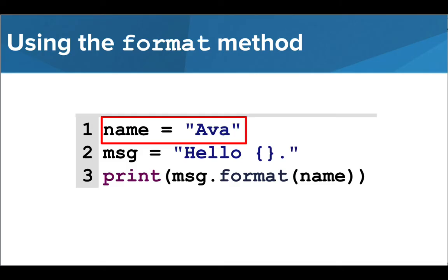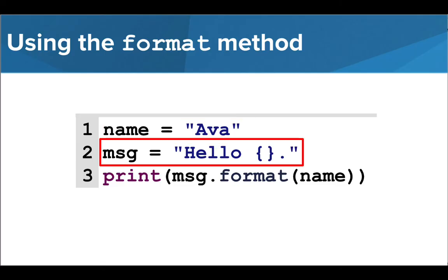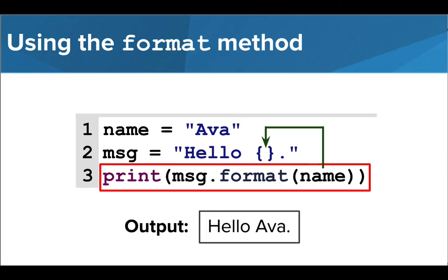First, we begin with a piece of information. This may be a variable we set or could be input a user has given. We then write a general message and anywhere we want personalization or to use the value of a variable, we use a set of curly brackets with nothing inside them. Note that we do not have to use addition signs around this value, as we do when we use concatenation. This shortens our messages considerably and minimizes the places we may make a mistake.